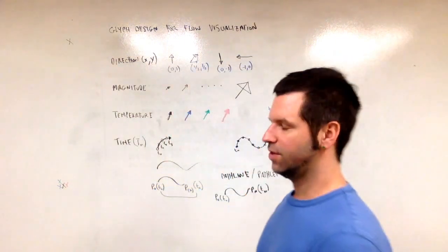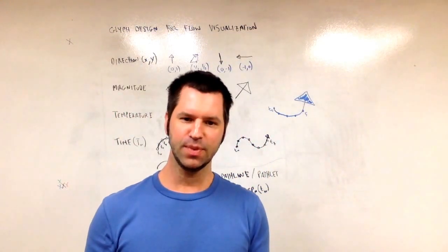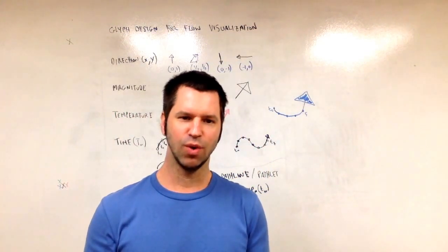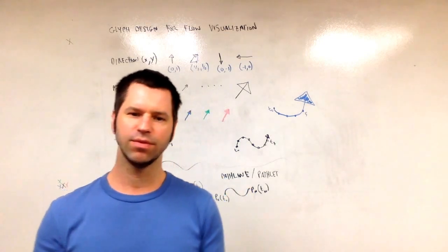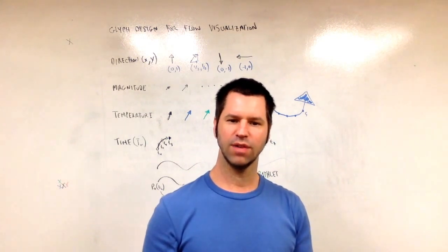So that's one possibility. It's not the only possibility, but it's one. And yeah, so that's a short introduction to glyph design for flow visualization. And I hope that helps answer the question.